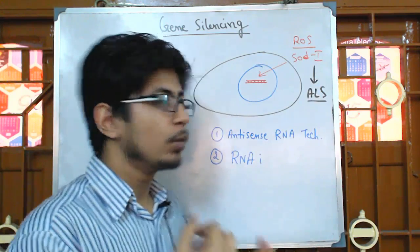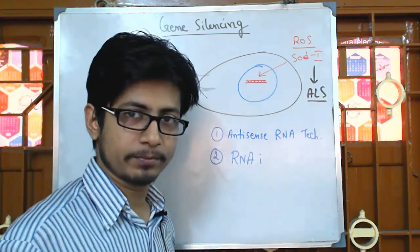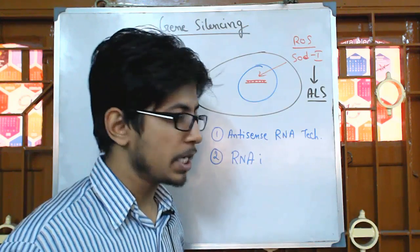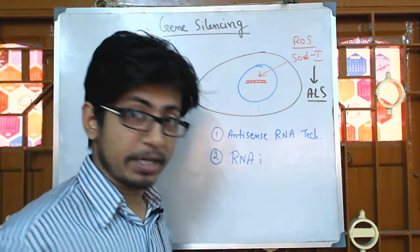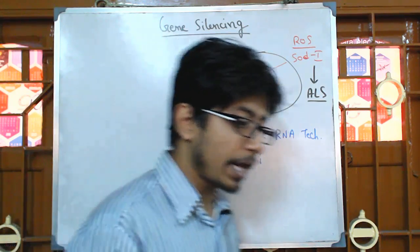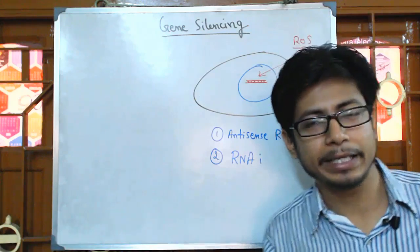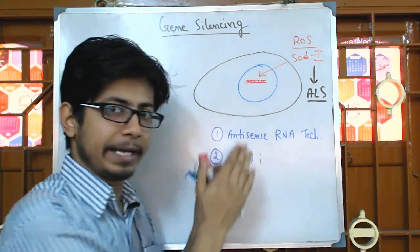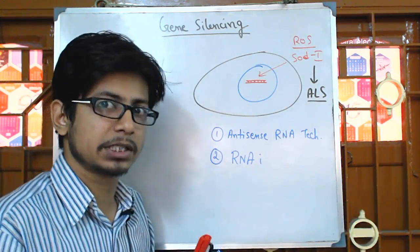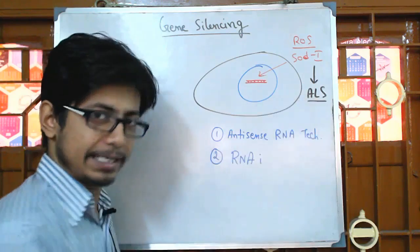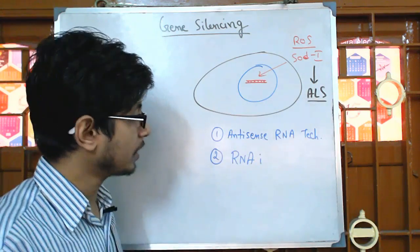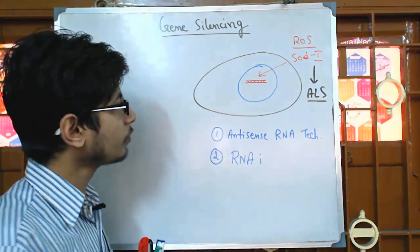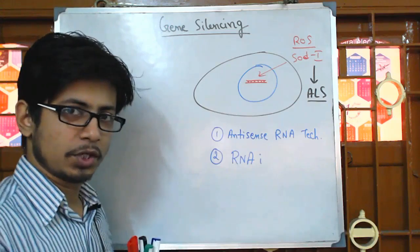If we find an individual who has a SOD1 mutation, we do not need that mutated SOD1 gene anymore. If we can fix that mutation it would be good, but if we cannot, then the idea is to remove that gene completely. If we can remove it by degrading that DNA, it can prevent us from getting the disease ALS.